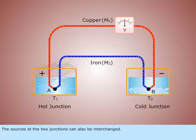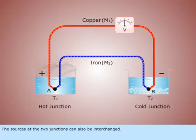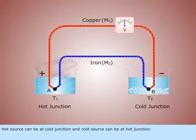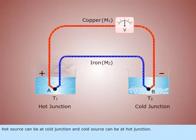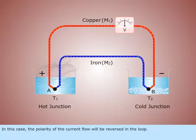The sources at the two junctions can also be interchanged. In this case, the polarity of the current flow will be reversed in the loop.